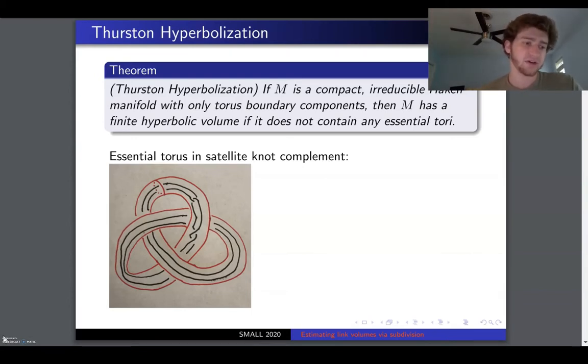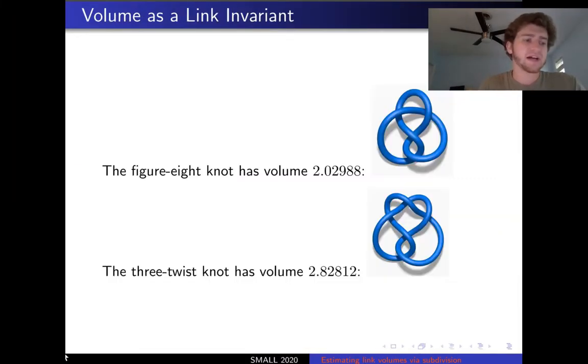As Darren mentioned earlier, there is a distinction between hyperbolic and satellite knots. This is exactly because of an essential torus preventing hyperbolicity. Many knots are hyperbolic, and hyperbolic volume is a topological invariant by Mostow rigidity, so in many cases we can use volume to distinguish knots. Here are the volumes associated to two simple knots.